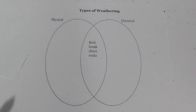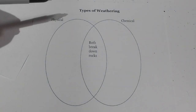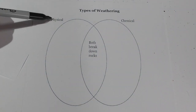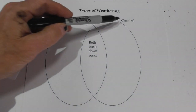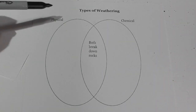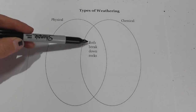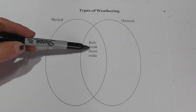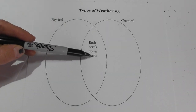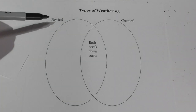Let's now go over the types of weathering. We have physical weathering and chemical weathering. They both have the same goal — they both break down rocks.